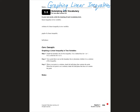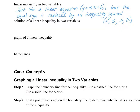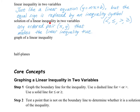Please open your journals to page 159. For a linear inequality in two variables, it's just like a regular linear equation that we have been using, like y equals mx plus b, where m is your slope and b is your y-intercept. But instead of the equal sign, we're going to replace that with an inequality symbol, like less than, less than or equal to, greater than, or greater than or equal to. A solution of a linear inequality in two variables is any ordered pair, always written in the form (x, y), that makes the linear inequality true.